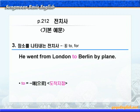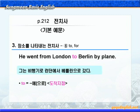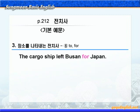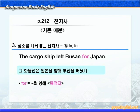to는 '뭐뭐에' 혹은 '뭐뭐로'라는 뜻으로 도착 지점을 나타내고, by plane은 '비행기로'라는 얘기니까, '그는 비행기로 런던에서 베를린으로 갔다'가 됩니다. 다음으로 for를 살펴보죠. for는 '뭐뭐를 향해'라는 뜻으로 목적지를 나타내죠. cargo ship 혹은 cargo boat하면 '화물선'이라는 뜻이니까, '그 화물선은 일본을 향해 부산을 떠났다'가 됩니다.